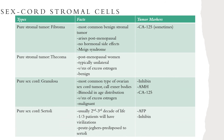Sex cord stromal cell tumors can arise from the sex cord, the stromal cells, or both. They are the least common of all ovarian tumor types. They typically present similarly to epithelial and germ cell tumors, but a key difference is that many will also show signs of estrogen excess or androgen excess on physical exam. Estrogen excess presents as abnormal uterine bleeding and increased risk of endometrial hyperplasia or neoplasm. Androgen excess presents as hirsutism, acne, male pattern baldness, or menstrual abnormalities.